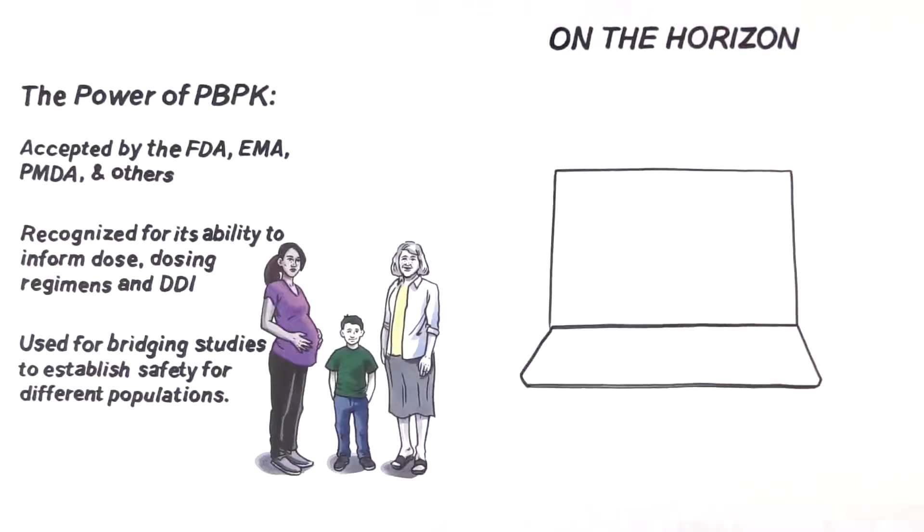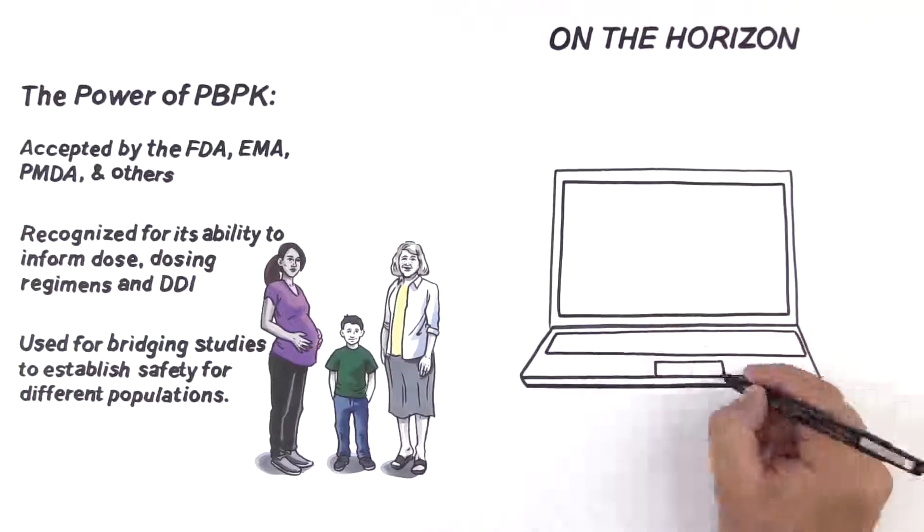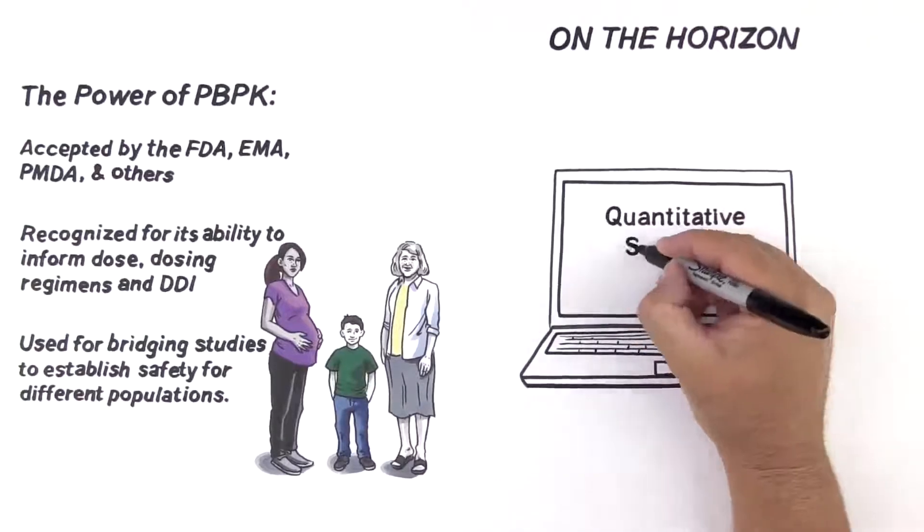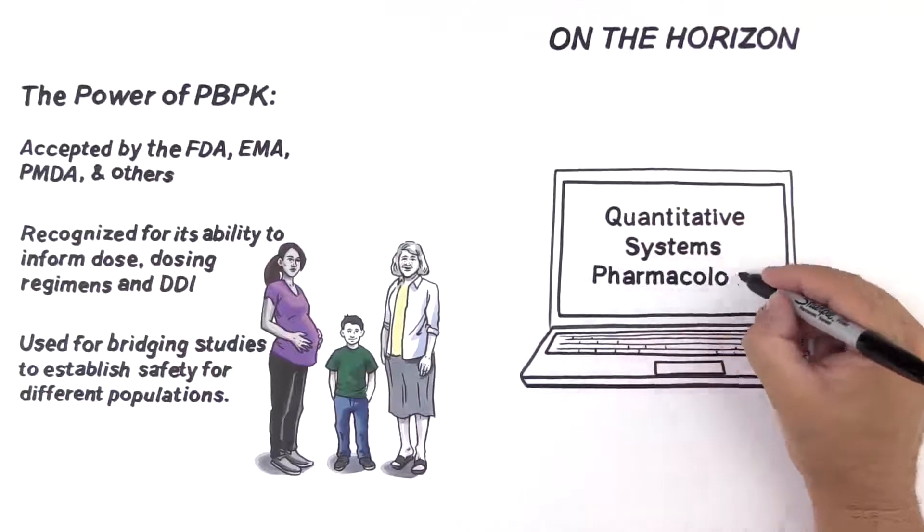Quantitative Systems Pharmacology, or QSP, another platform pharmacology approach, is a rapidly advancing discipline that integrates quantitative drug data with systems biology knowledge, such as mechanisms of action.